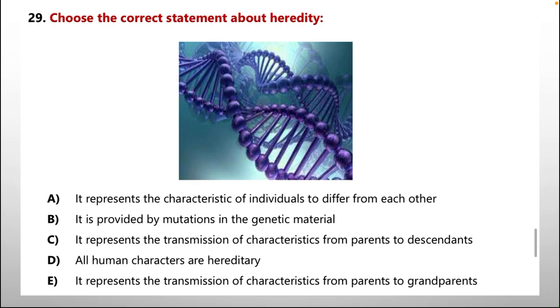Question number 29. Choose the correct statement about heredity. Options are at the bottom of the slide. It represents the characteristic of individuals to differ from each other. It is provided by mutation in the genetic material. C. It represents the transmission of characteristics from parents to descendants. D. All human characters are heredity. E. It represents the transmission of characters from parents to grandparents. Which option number E is wrong. It is not the reverse process from parents to grandparents.